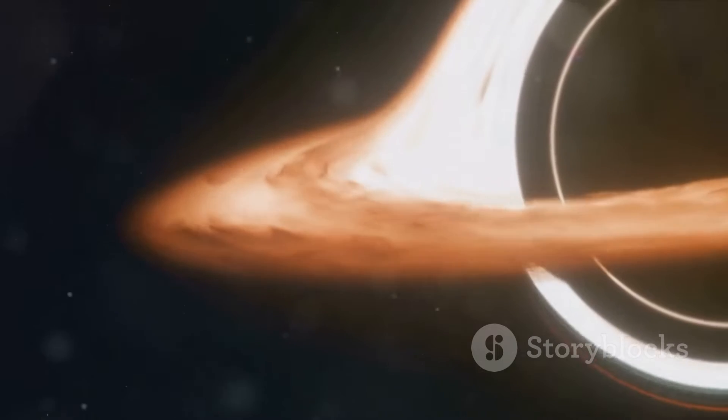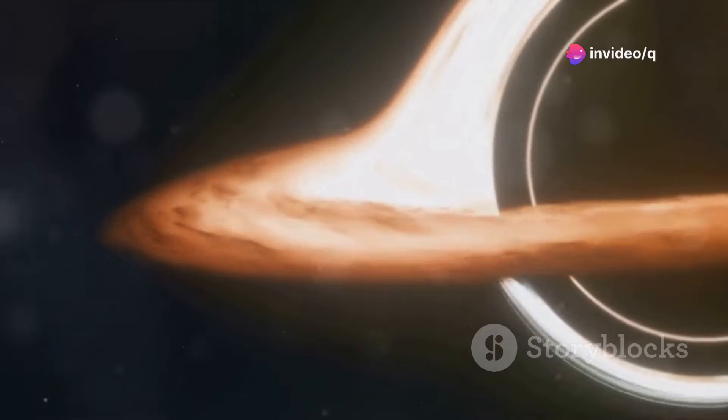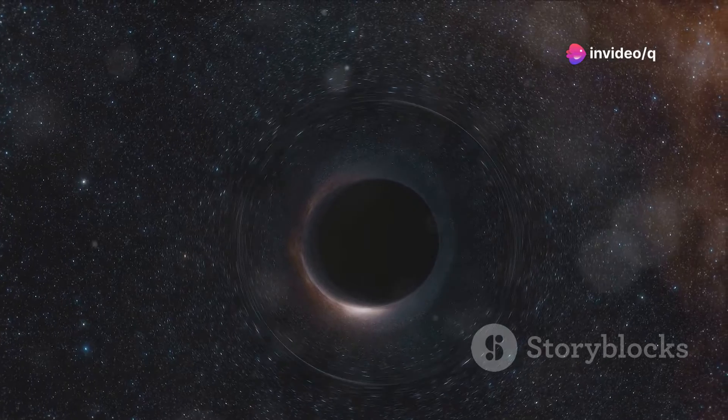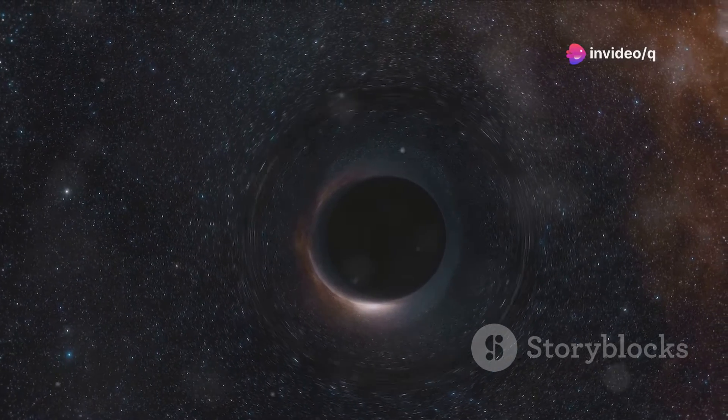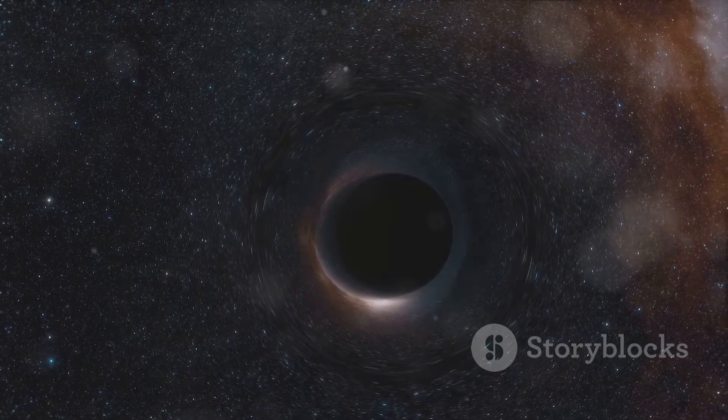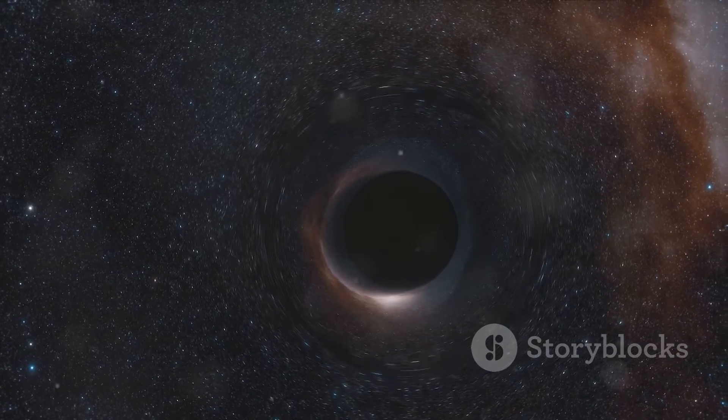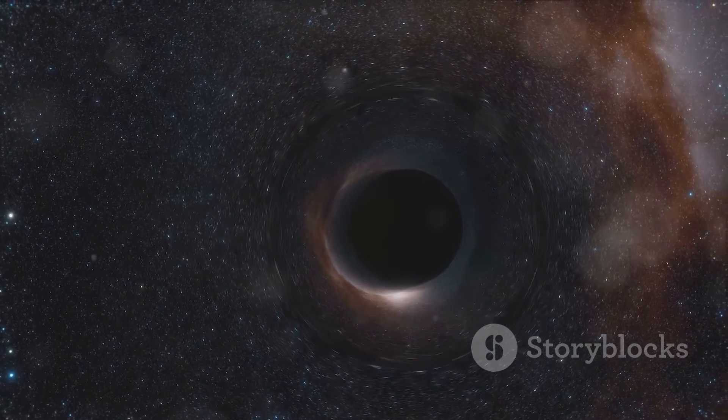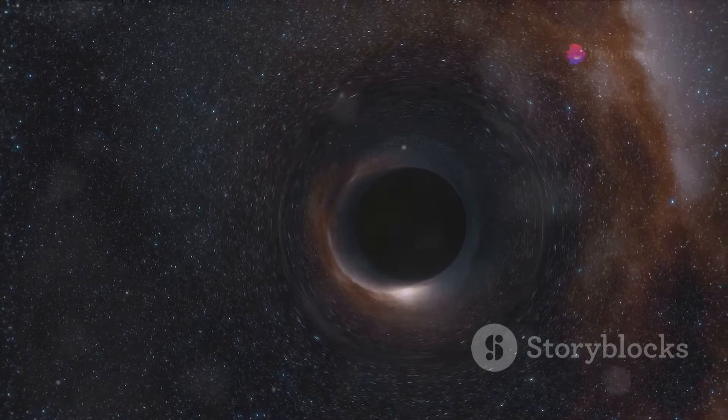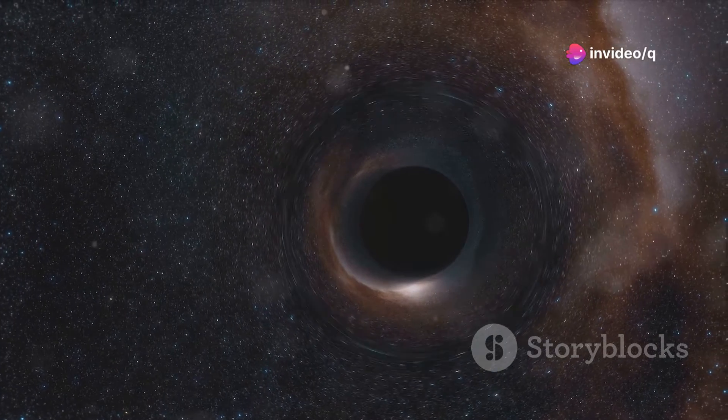In the Big Bang Theory, the universe starts as a singularity and expands outward, whereas in a black hole, matter collapses into a singularity, creating a region of extreme gravitational pull. While both involve intense energy and density, they arise from distinct physical processes and contexts.